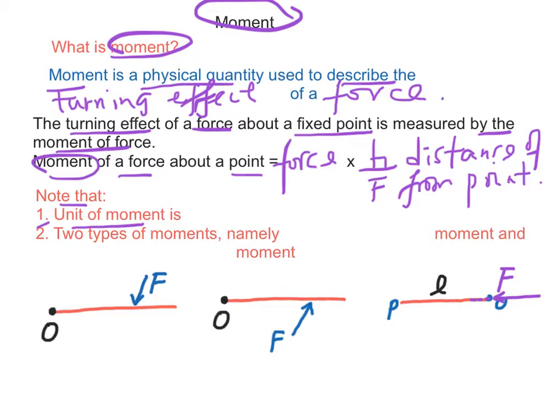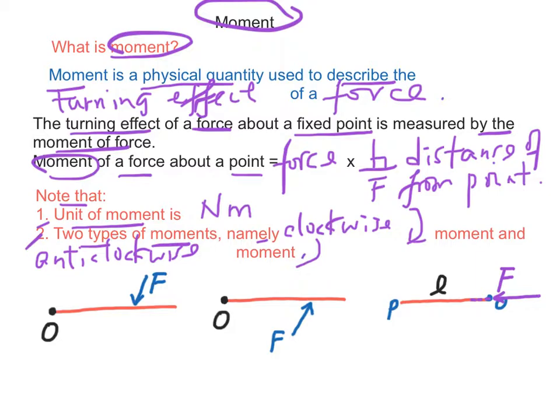The unit of moment is newton meter. Second, there are two types of moments, namely clockwise moment and anticlockwise moment. For case 1, if the force F applies in that direction, the moment of the force about the point O is clockwise moment.